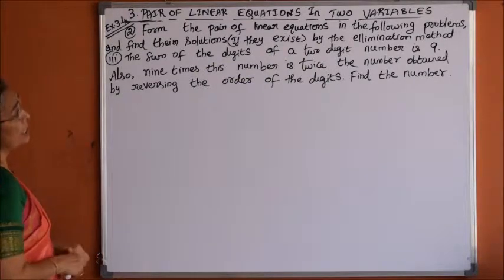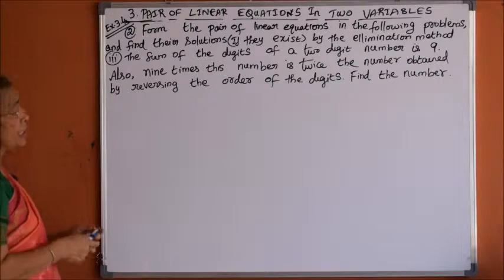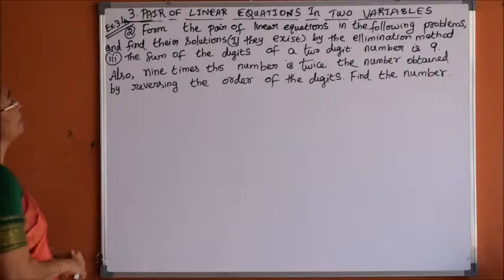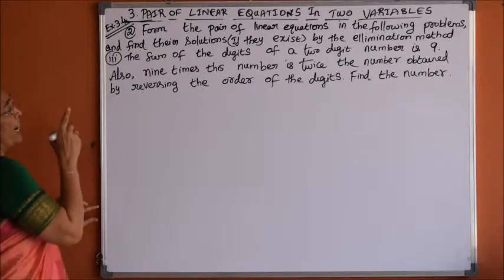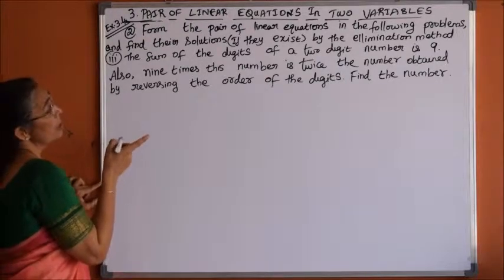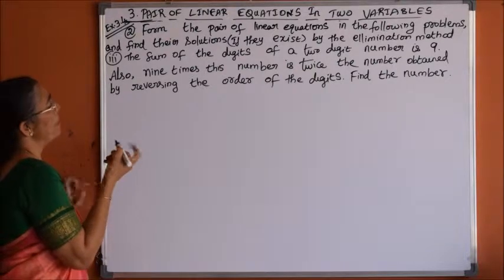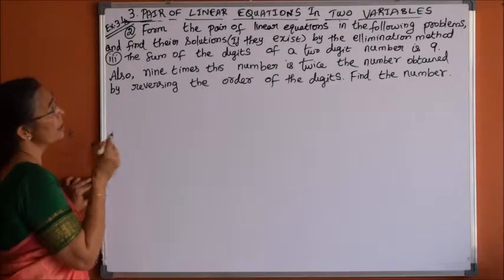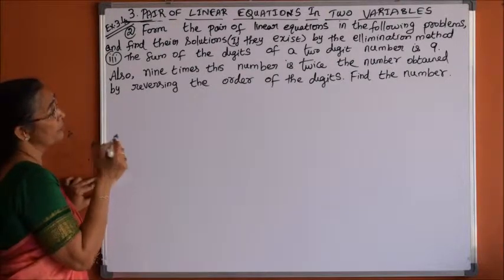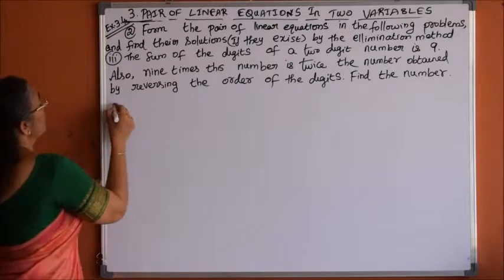The sum of the digits of a 2-digit number is 9. Also, 9 times this number is twice the number obtained by reversing the order of the digits. Find the number.